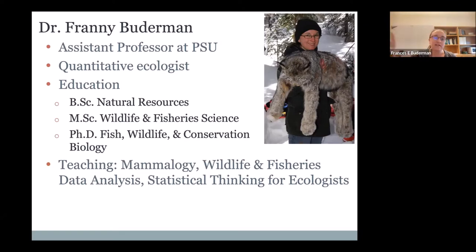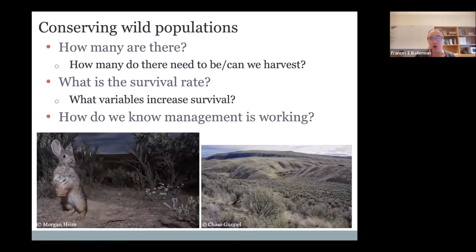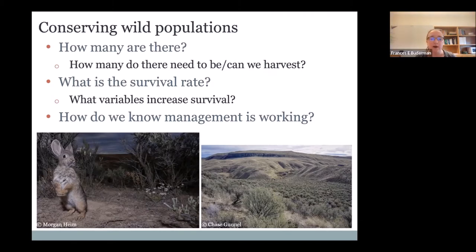I got into this field because I really wanted to conserve and help manage wild populations. There are a few things we need to know to do that well. One basic question is: how many are there? You'll see reports like 'there are 300 Bengal tigers left in the wild' or '50 black rhinoceros' — so how do we even know that? That's often tied to the question of how many there need to be, or how many can we harvest. And for some populations, there's a minimum number needed to prevent the population from spiraling into inbreeding and genetic decline.